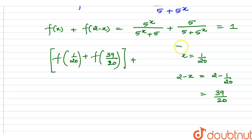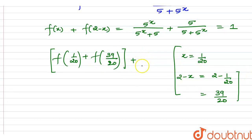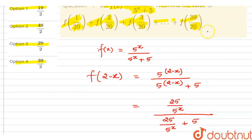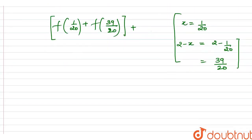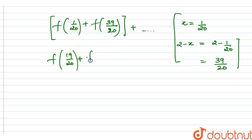In a similar manner, we can form other pairs. This continues up to the nth term. For example, f(2/20) pairs with f(38/20), which also equals 1. This pattern continues up to the 19th pair, which gives us f(19/20) plus f(21/20) = 1.